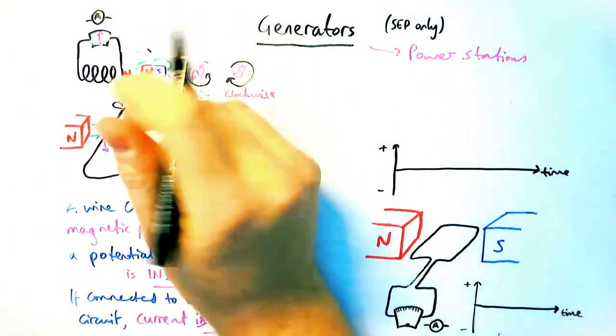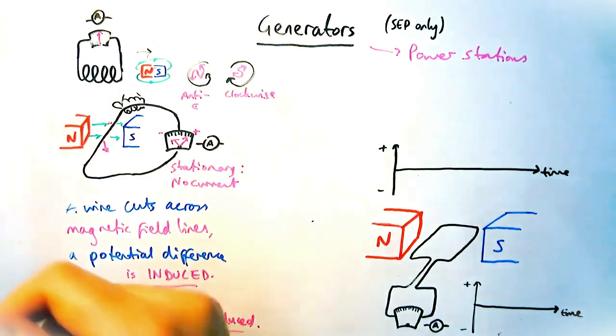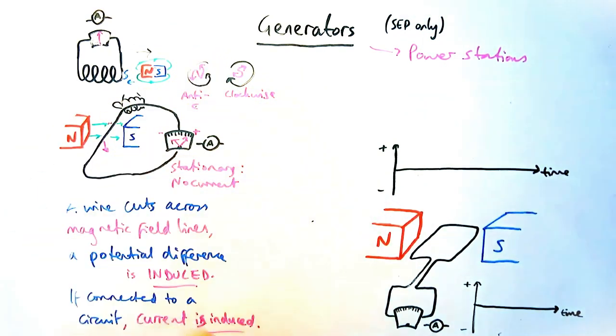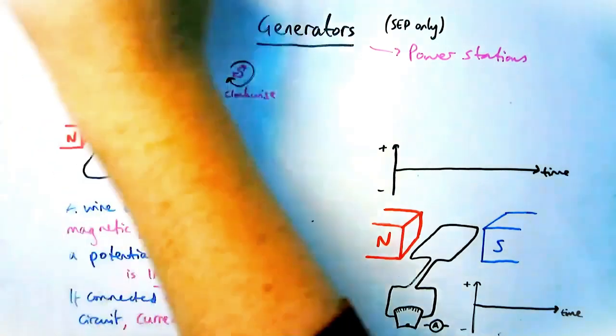the coil of wire would have a current induced in the direction to attract it back in. So this time, it would be a south pole, and it would be flowing in the clockwise direction to oppose the change that's causing it.